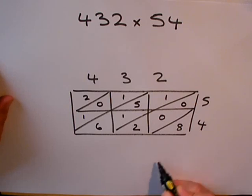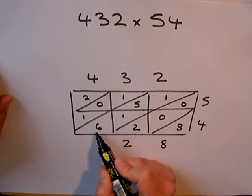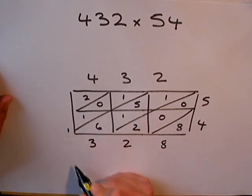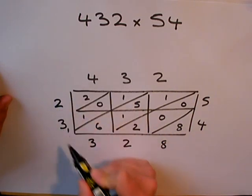Now I can add up the diagonals. Eight, two, six and five is 11, 12, 13. One to carry around the corner. One, one and one is three. And finally, two on its own there.